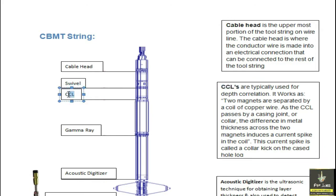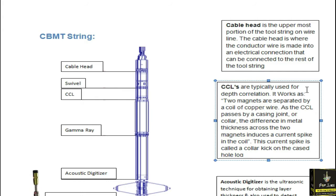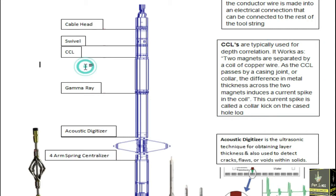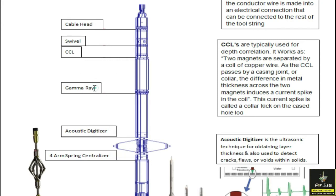The CCL uses two magnets to detect the distance between the casing, so we can detect the casing collars. I will explain the gamma ray at the end.